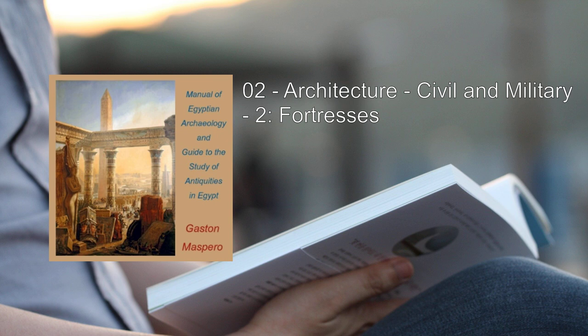The oldest fortresses are those of Abydos, El-Kab, and Semne. Abydos contained a sanctuary dedicated to Osiris, and was situate at the entrance of one of the roads leading to the oasis. As the renown of the temple attracted pilgrims, so the position of the city caused it to be frequented by merchants. Hence the prosperity which it derived from the influx of both classes of strangers exposed the city to incursions of the Libyan tribes. At Abydos there yet remain two almost perfect strongholds. The older forms, as it were, the core of the tumulus, called by the Arabs Com-es-Sultan, or the Mount of the King. It forms a parallelogram of crude brickwork, measuring 410 feet from north to south, and 223 feet from east to west.